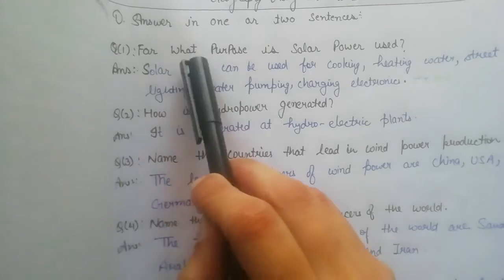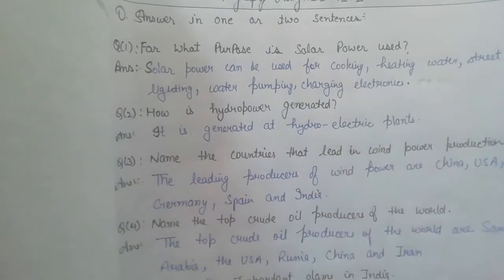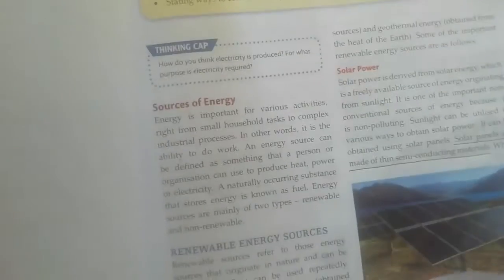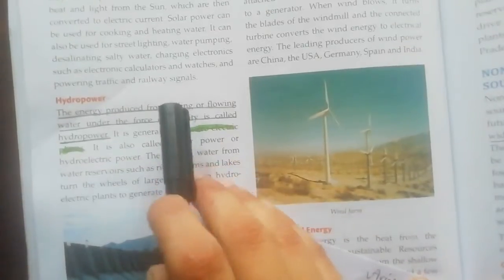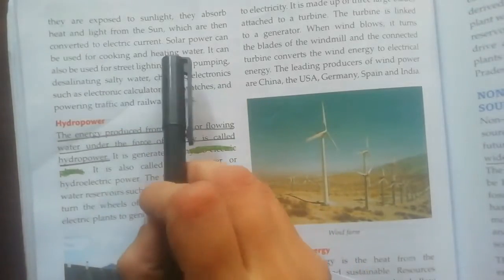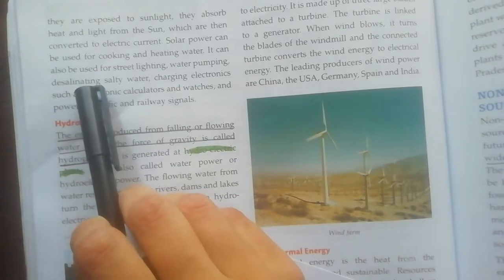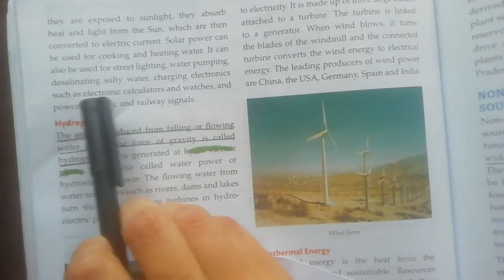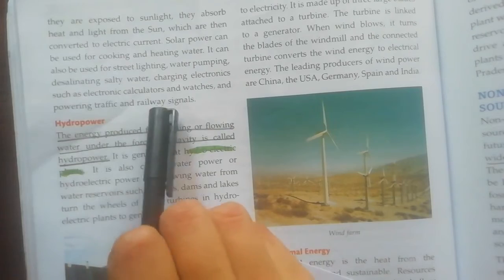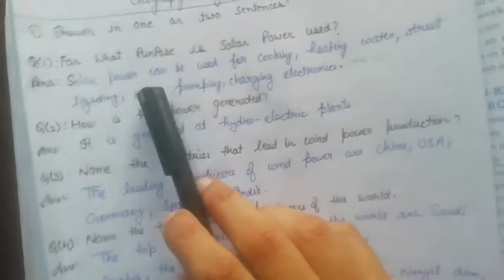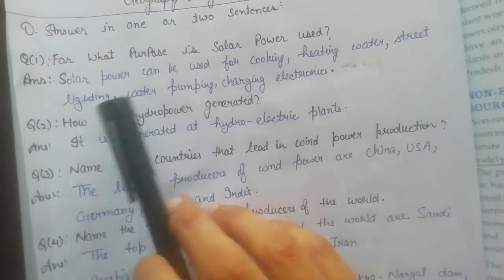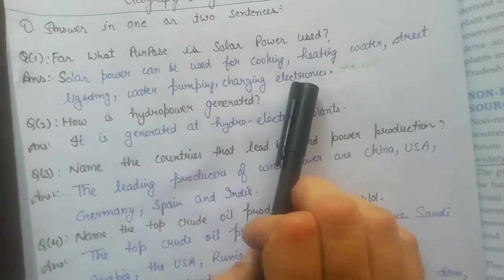First question: for what purpose is solar power used? Solar power is used for cooking, heating, street lighting, water pumping, desalinating salty water, charging electronics like electronic calculators and watches, and powering traffic and railway signals. The answer we can write is: solar power can be used for cooking, heating water, street lighting, water pumping, and charging electronics.